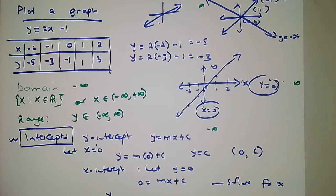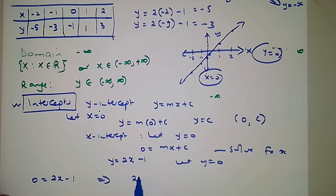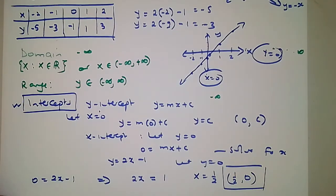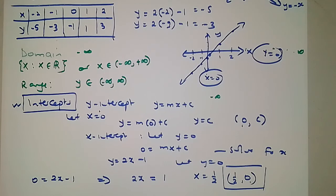Let's do an example with y = 2x - 1. To find the x-intercept, let y = 0: 0 = 2x - 1. Add 1 to both sides: 2x = 1, so x = 1/2. The coordinates of the x-intercept are (1/2, 0). Remember: if x = 0 in a coordinate, that's the y-intercept; if y = 0, that's the x-intercept — where the graph cuts the x-axis.